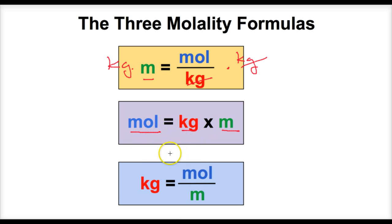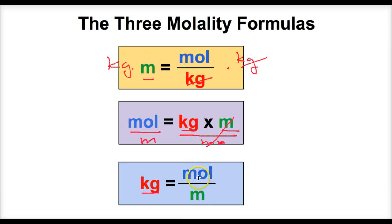If we want to figure out the kilograms of solvent, we isolate it by dividing both sides by molality — they cancel out — and kilograms equals moles divided by molality. So these are our three molality formulas we can use to solve problems involving molality, moles of solute, and kilograms of solvent.